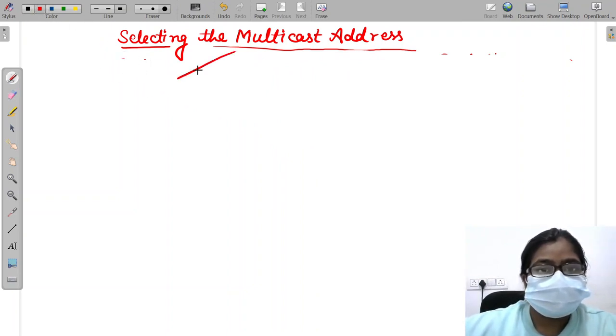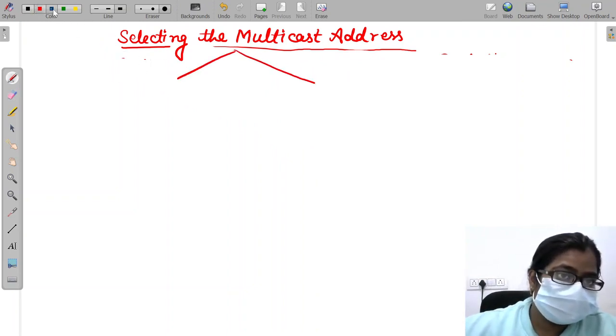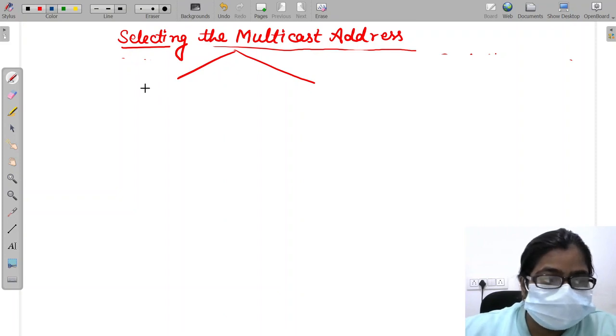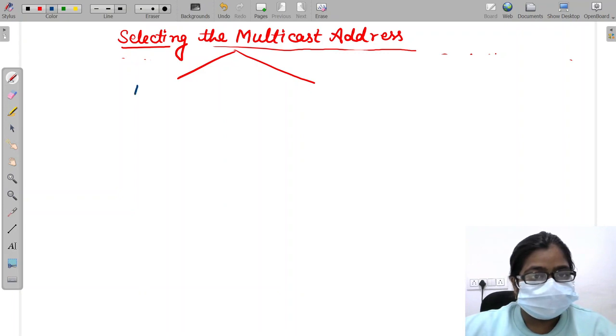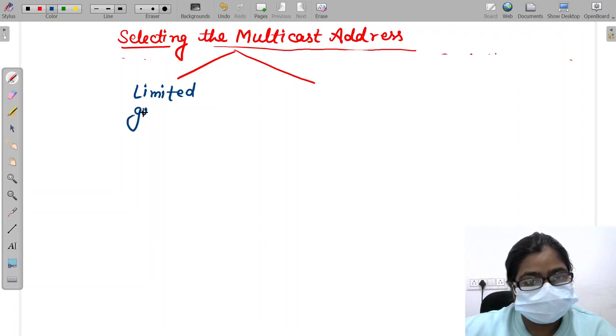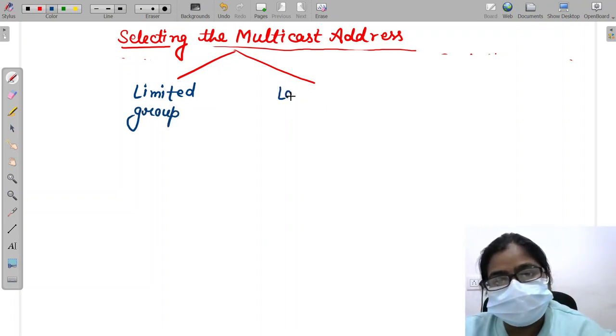Selecting the multicast address. This selection can be done on two different bases. Number one is for the limited group and second one is for the large group.